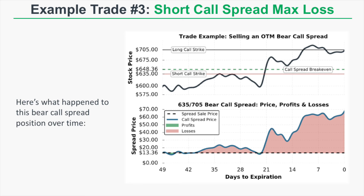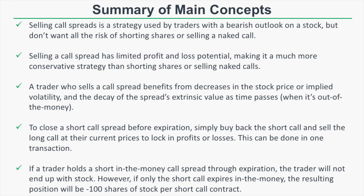Since the spread's strike width is $70, the most it can be worth is $70. We sold it for $13.36, so if the spread is worth $70 at expiration we lose the maximum loss of $5,664. In this example, the short 635 call is in the money at expiration but the long 705 call is just barely out of the money — meaning the long call expires worthless. If you held the short call through expiration, you'd be assigned 100 short shares at $635. Keep in mind: if only the short call is in the money at expiration, you'll take on a short stock position if you don't close the spread.